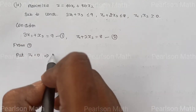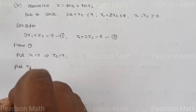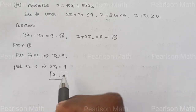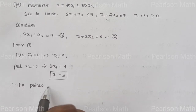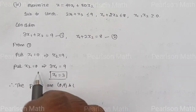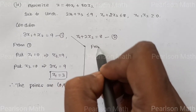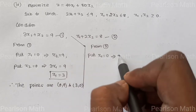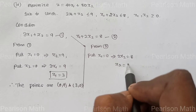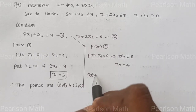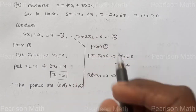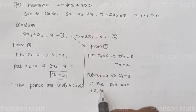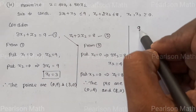For the first equation, put x1 equal to 0, then x2 equal to 9. Put x2 equal to 0, then 3x1 equal to 9, so x1 equal to 3. Therefore, the points are (0, 9) and (3, 0). For the second equation, put x1 equal to 0, then 2x2 equal to 8, so x2 equal to 4. Put x2 equal to 0, then x1 equal to 8. Therefore, the points are (0, 4) and (8, 0).